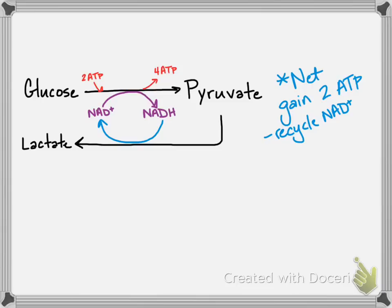And so in our muscle cells, when oxygen is depleted — maybe because you're out running, or you're climbing stairs, or you're doing some sort of crazy workout that your coach has designed for you — this is going on in your muscle cells if oxygen is running low. Especially if you're using lots of ATP for that muscle movement, this is likely to happen.